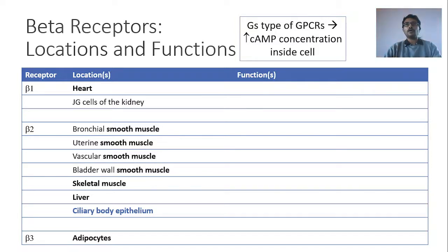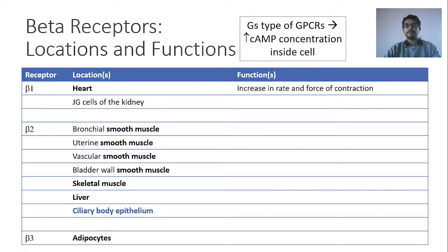Let us look at the functions of beta-receptors. The intrinsic agonist is either noradrenaline or adrenaline, and upon binding, it leads to all the effects required for the fight-or-flight situation. When adrenaline binds to beta-1 receptors in the heart, we need the heart to be beating more strongly and more frequently — so there is increase in heart rate and force of contraction. Beta-1 receptors in the JG cells of the kidney lead to increase in renin release, activating the renin-angiotensin system, leading to vasoconstriction and increase in blood pressure.